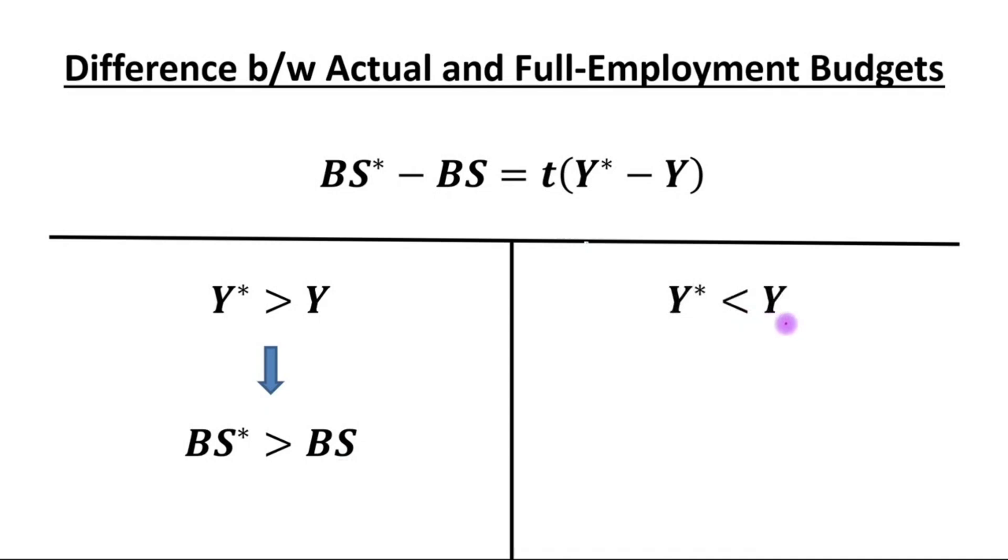Conversely, if potential output is less than actual output (Y* < Y), then full employment budget surplus will be less than actual budget surplus (BS* < BS). Thank you.